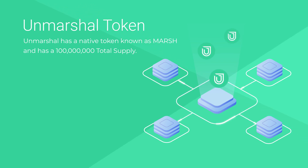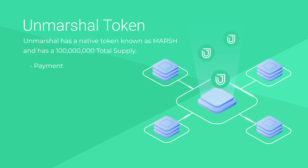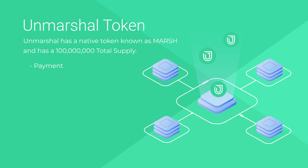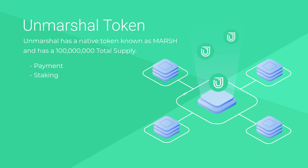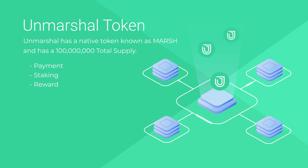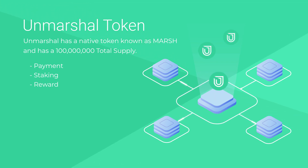MARSH use cases include payment — data consumers using the infrastructure stake MARSH tokens for using the infrastructure services. Staking — indexers will stake MARSH tokens to become node operators to provide indexing and query processing. And for rewards — other network contributors will earn MARSH tokens as rewards for contributing their services to the network.